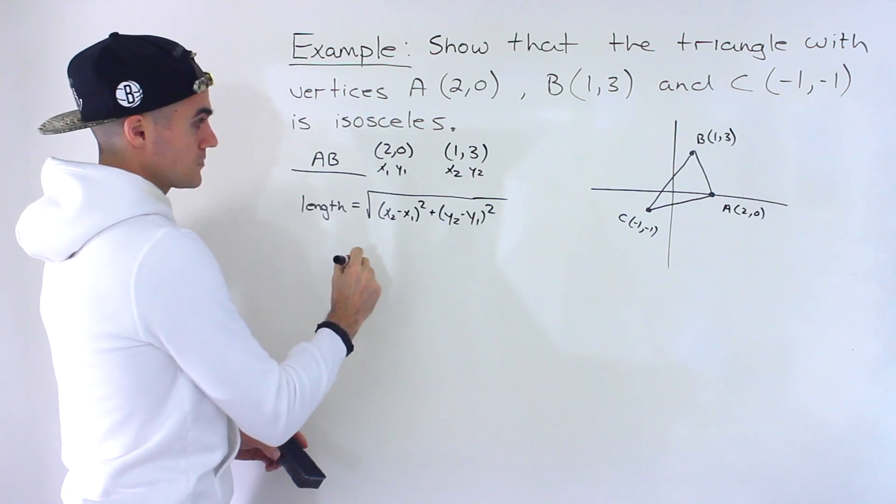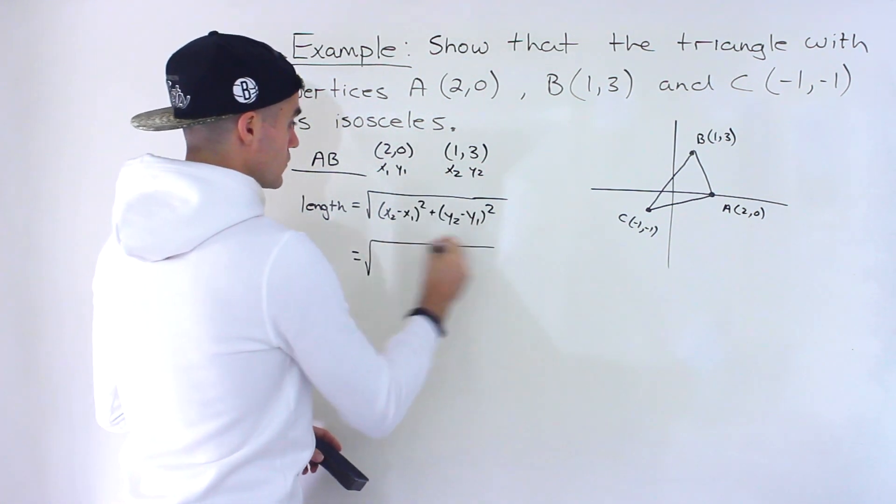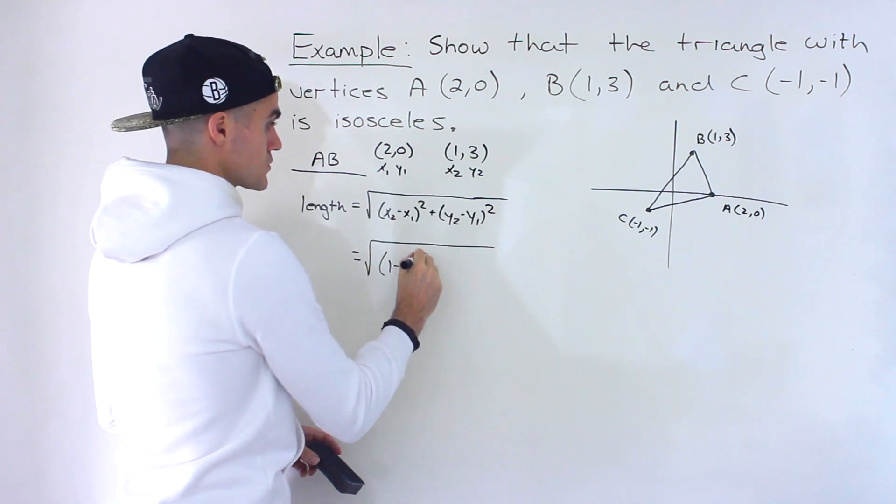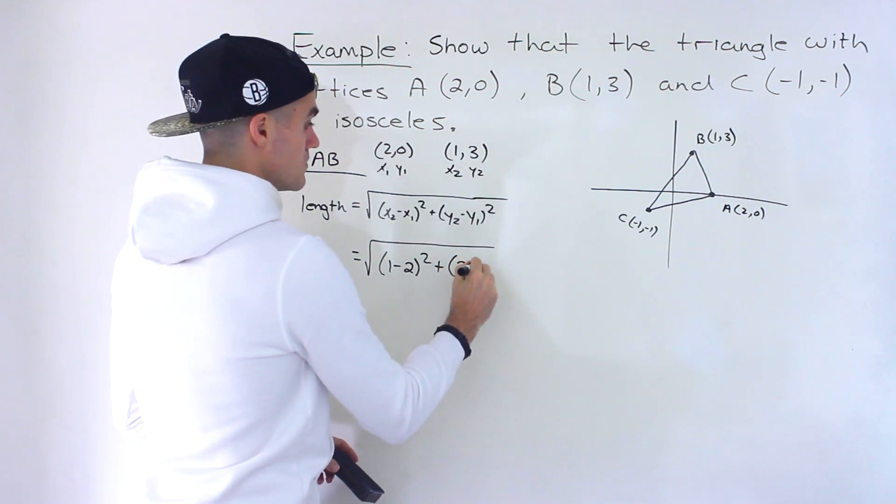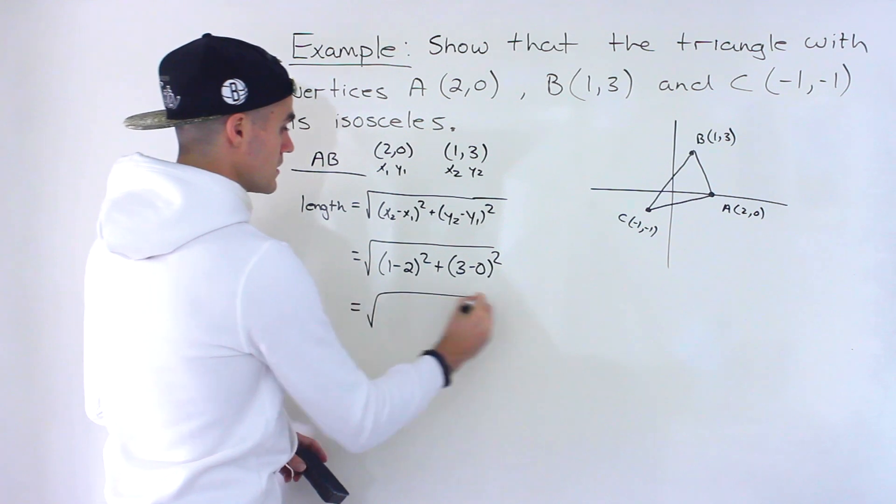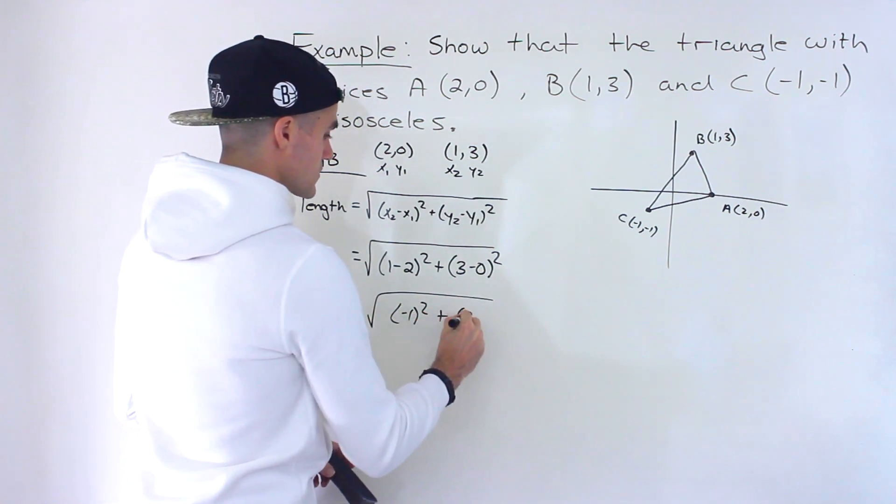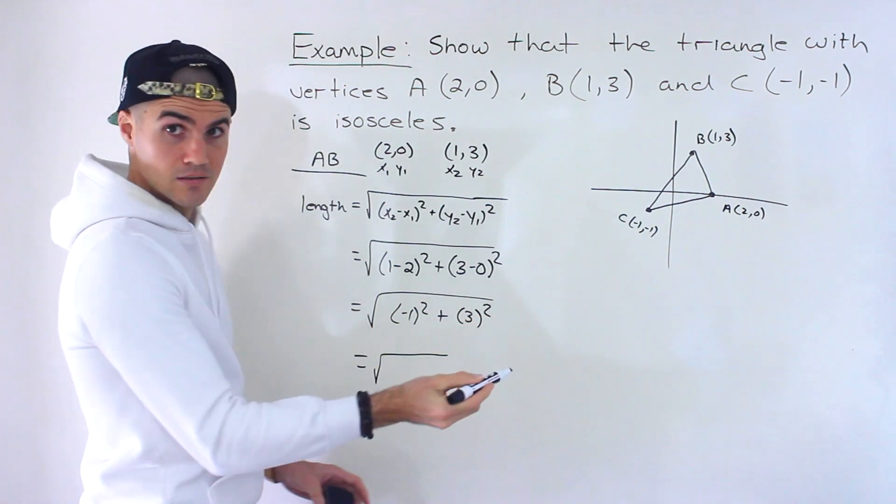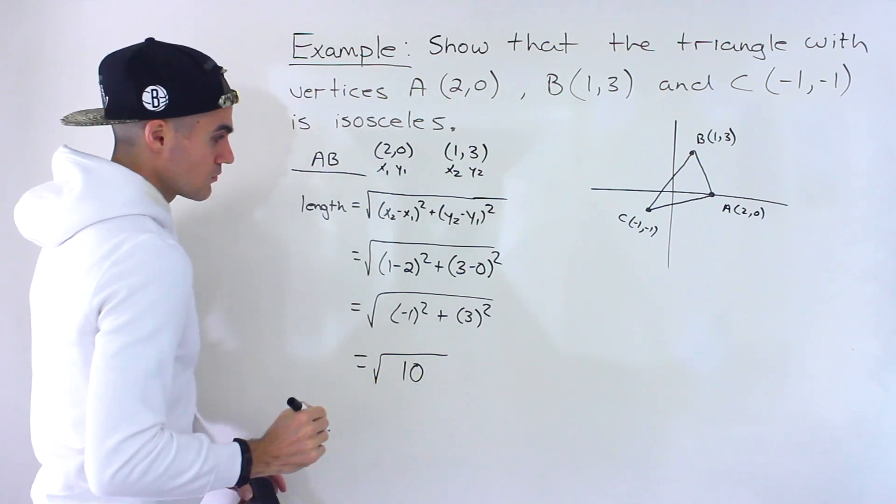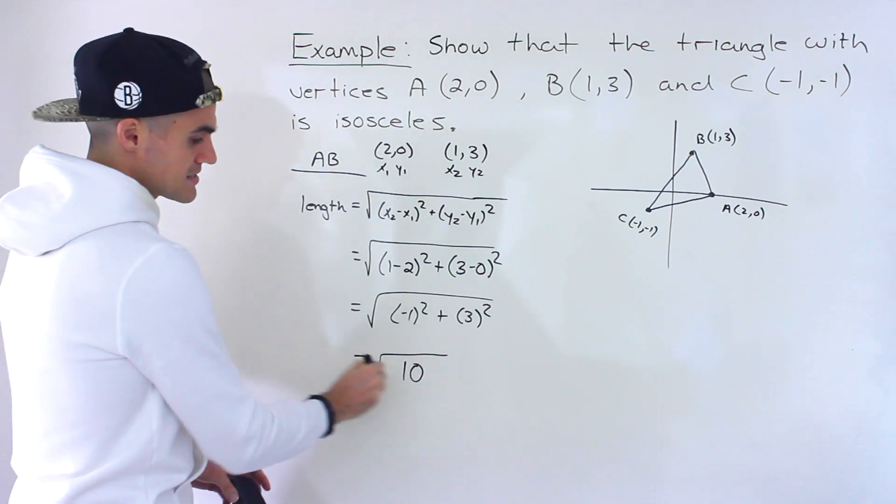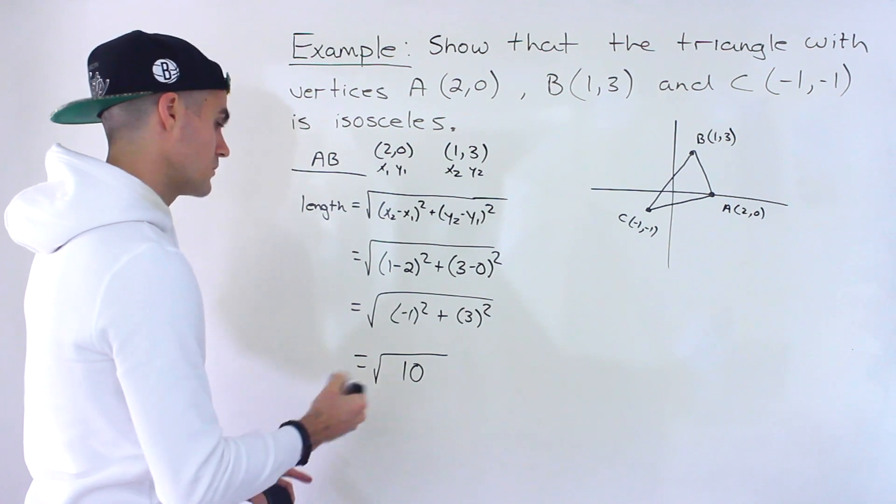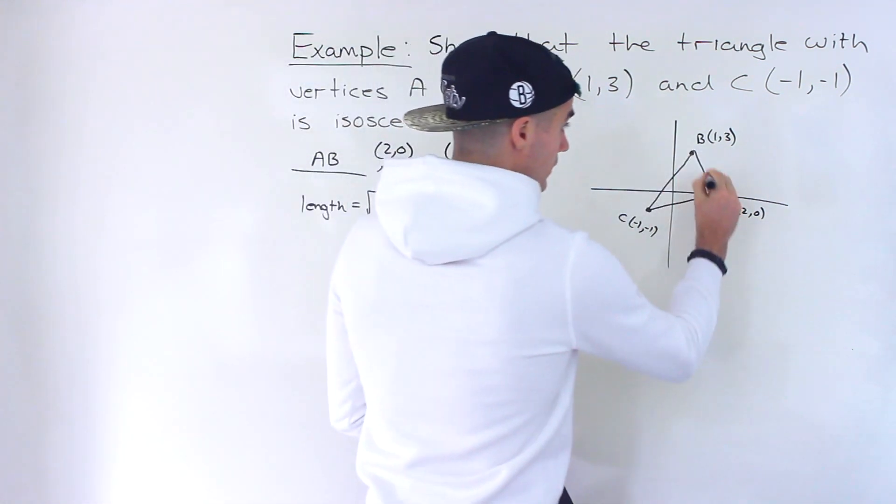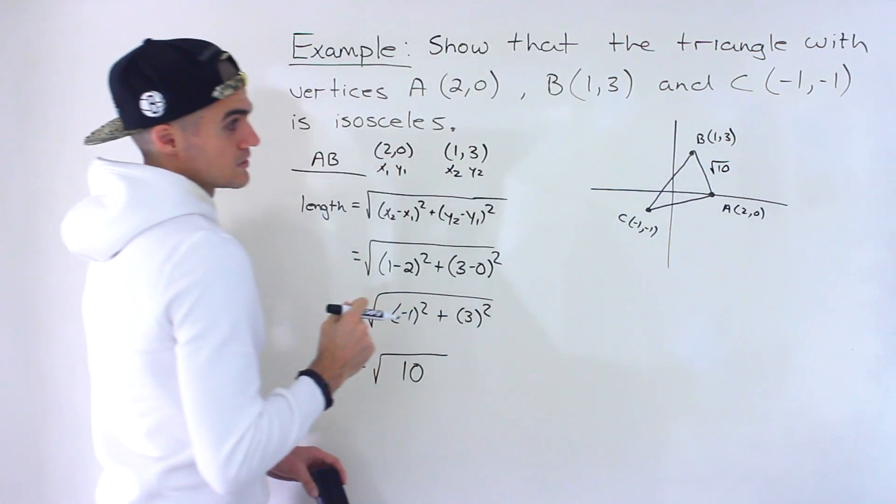So from here we'll have square root of, x₂ minus x₁, so we'll have 1 minus 2 squared plus 3 minus 0 squared, which would be (-1)² plus 3², and then we would end up with 1 plus 9, which would give us 10. So we'd have the square root of 10. You can get the decimal of this, I think it would be like 3 point something, but I'm just going to leave it as an exact value. So the length over here is √10.